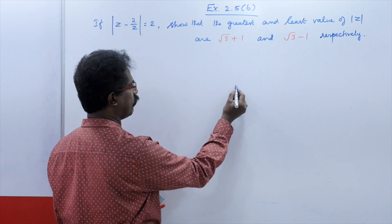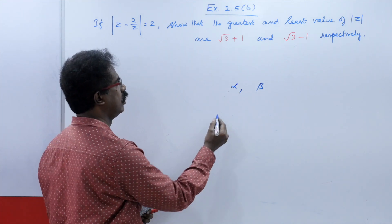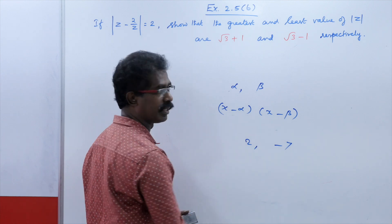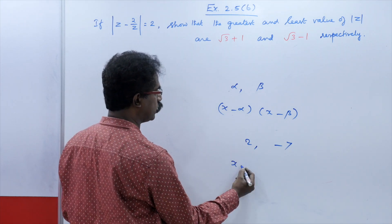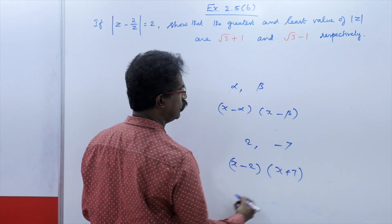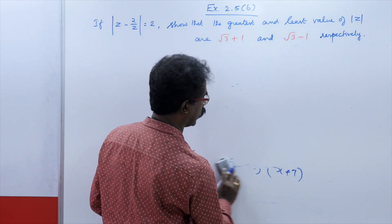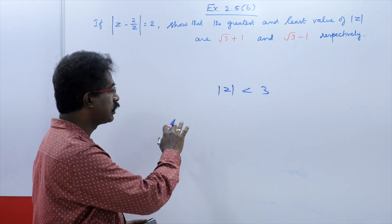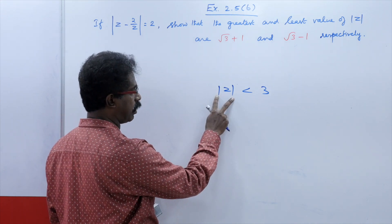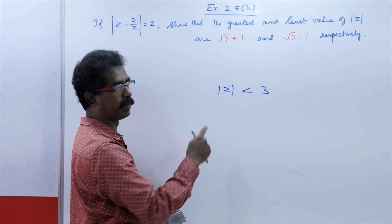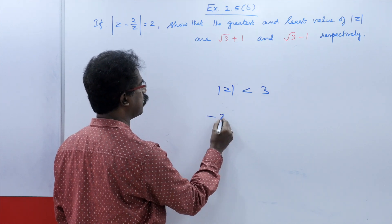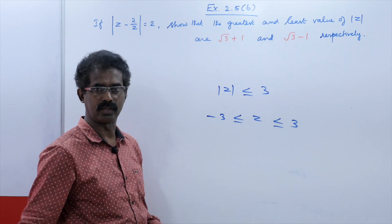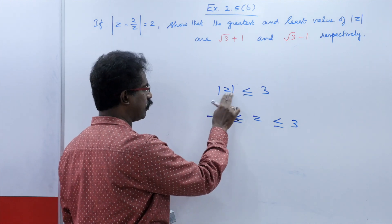Suppose the roots are alpha and beta. Then the factors are (x minus alpha)(x minus beta). For example, if the roots are 2 and minus 7, the factors are (x minus 2)(x plus 7). So if you know the roots, you can factorize and write the factors. Also, modulus z less than 3 means z lies between minus 3 and plus 3: minus 3 less than z less than 3. If it is less than or equal to, for example modulus z less than or equal to 10, then z lies between minus 10 and plus 10.